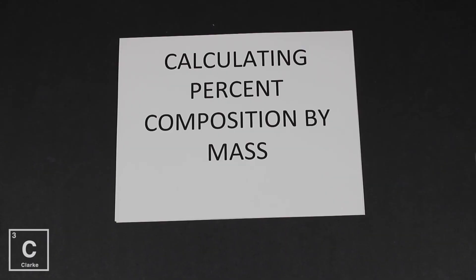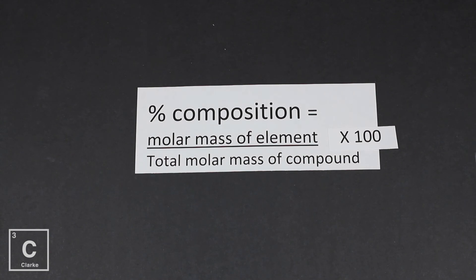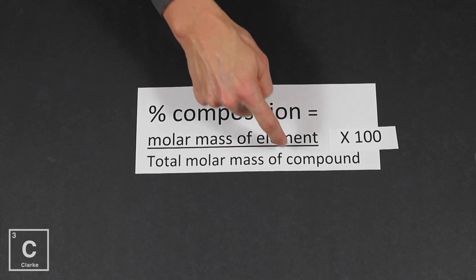So calculating percent composition by mass, that just means if you've got a compound, what percentage of that compound is made of this element, and what percentage is made of the other elements? We're going to learn how to calculate that, but let's remember, percents are just parts of a whole. So you have a whole compound, the percent of one of the elements, that's the part, the part of the whole.